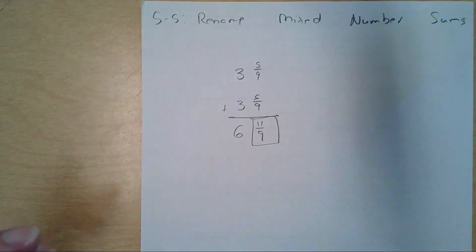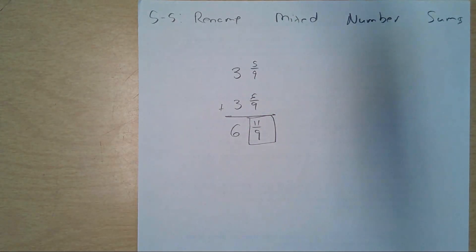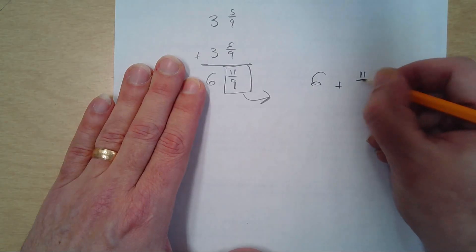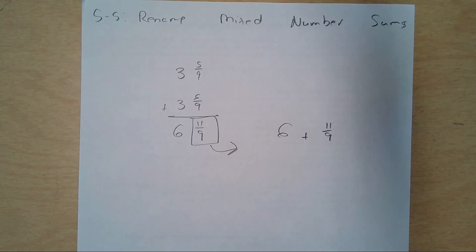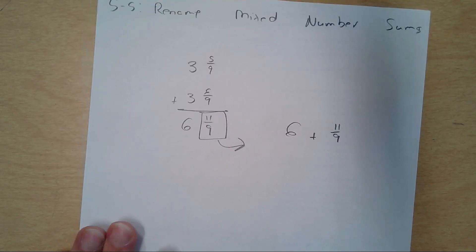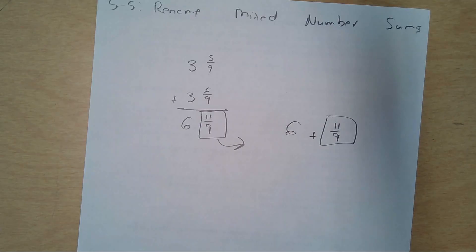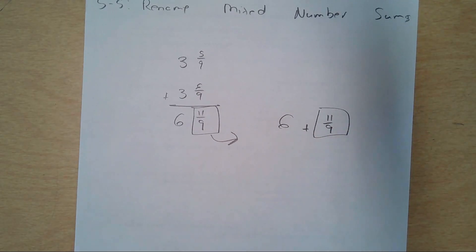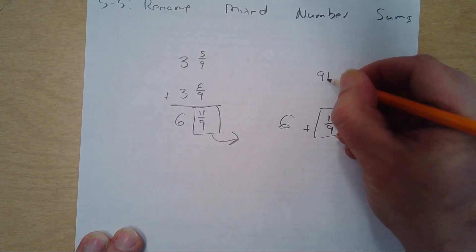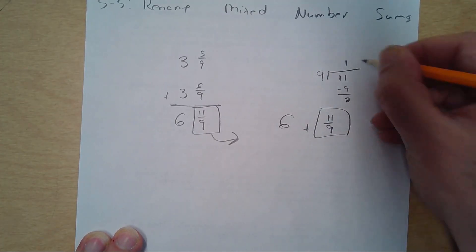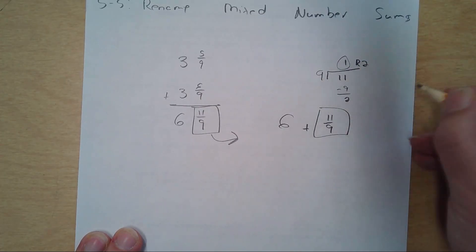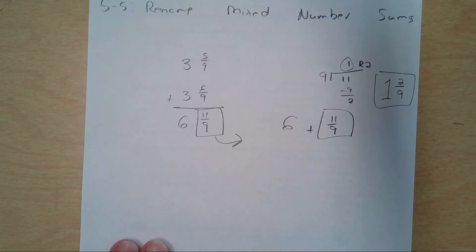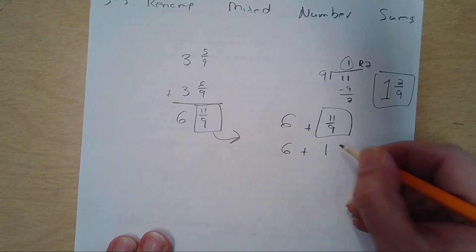5 ninths and 6 ninths is 11 ninths. 3 and 3 is 6. Everything's good. But what would we want to do? Well, this is just basically 6 plus 11 ninths. Any mixed number is just a representation of an addition problem — the whole number plus the fractional component. So instead of writing it this way, if I wrote this as a mixed number, what would it be? 7 and 2 ninths. The 11 ninths — what would that be as a mixed number? 1 and 2 ninths. I can always set up a division bar, subtract, and get 1 with a remainder of 2. Your quotient is your big number, your remainder is your numerator, your denominator never changes. So instead of 6 plus 11 ninths, I could say 6 plus 1 and 2 ninths.